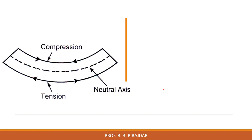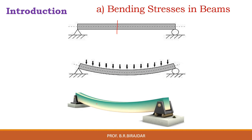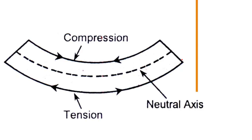Consider a simply supported beam — we apply a load on it. This is the initial beam, and due to the application of this load it gets deflected. When it deflects, the upper portion is in compression and the lower portion is in tension. Therefore, compressive stresses develop on the upper side and tensile stresses develop on the bottom side.